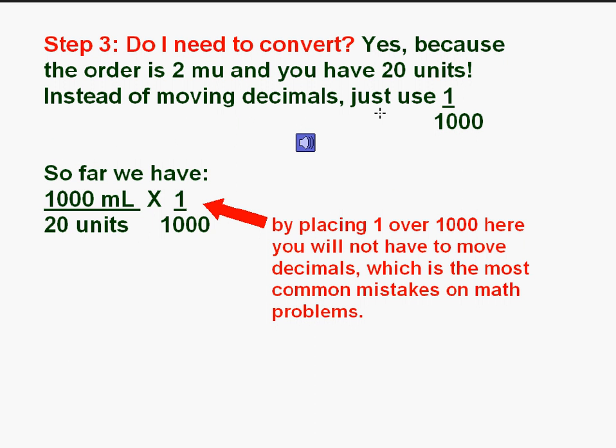Step 3: Do I need to convert? Yes, because the order is 2 million units and you have 20 units. Instead of moving decimals, just use 1 over 1,000. So far we have 1,000 mils with 20 units. We need to convert because our order is going to be in million units, so just put 1 over 1,000 and you're going to multiply that out. By placing 1 over 1,000 here, you will not have to move decimals, which is the most common mistake made on math problems.